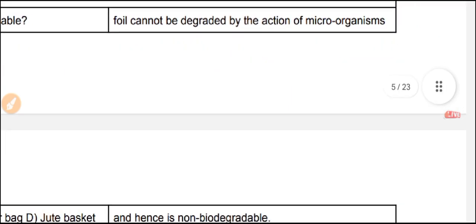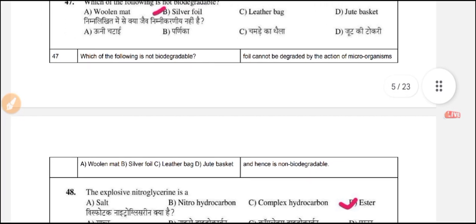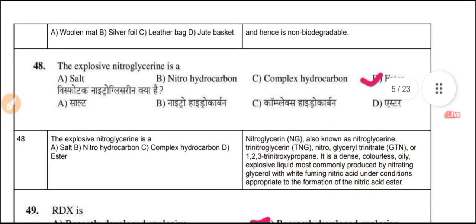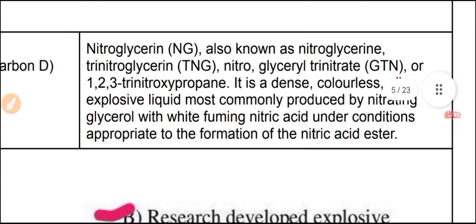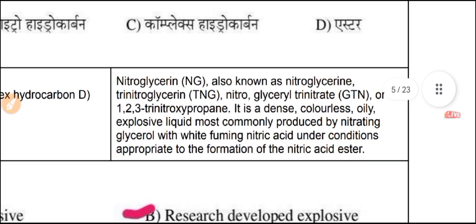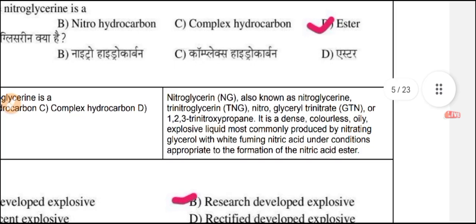Question 48: Nitroglycerin is also known as trinitroglycerin (TNG). It is a dense, colorless, oily explosive liquid, most commonly produced by nitrating glycerol using nitric acid under appropriate conditions. It is an ester.